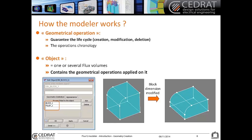How does the modeler work? In the modeler, we have two important entities: the geometrical operation and the object. The geometrical operation is the action you perform in the modeler — all actions you do are stored as geometrical operations. This entity guarantees the lifecycle of creation, modification, and deletion.